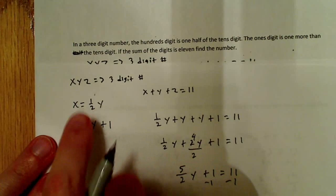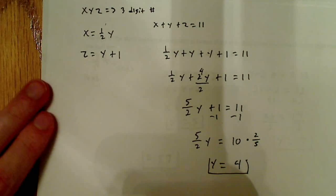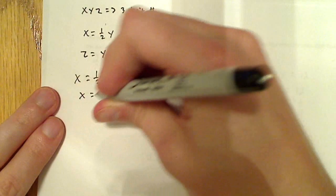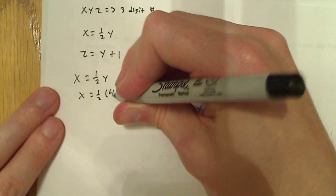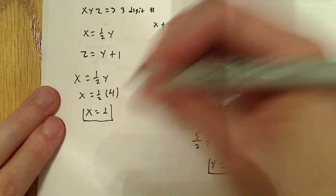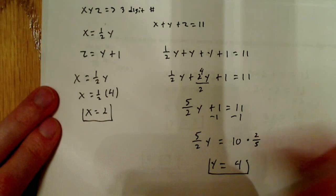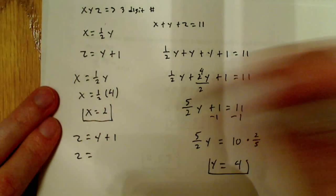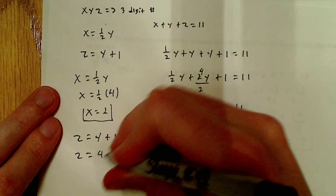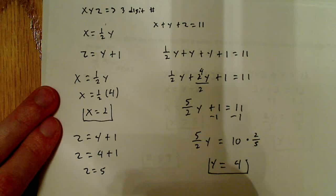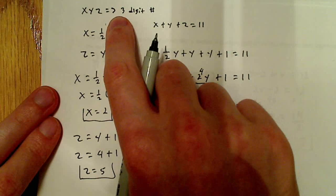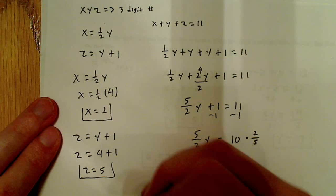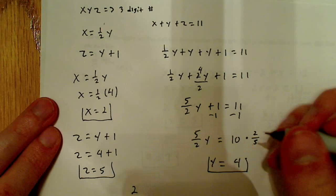Now that I have y, and everything else is defined in terms of y, all I have to do is plug in. So x is equal to one-half y, which is one-half of 4, so x equals 2 — that's my hundreds digit, and y equals 4 is my tens digit. For the ones digit, z is equal to y plus 1, so z equals 4 plus 1, which is 5. The three-digit number is 245.